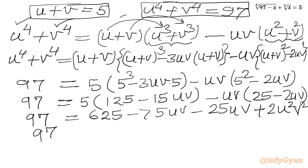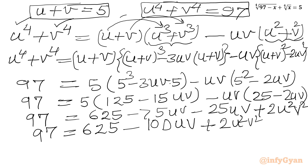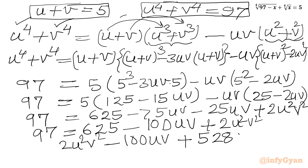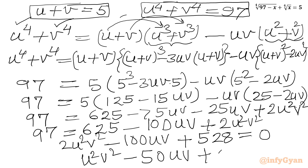So we can write: 97 equals 625 minus 100uv plus 2u²v². Taking all terms to the right-hand side gives 2u²v² minus 100uv plus 528 equals 0. Dividing by 2: u²v² minus 50uv plus 264 equals 0. This equation is quadratic in uv.